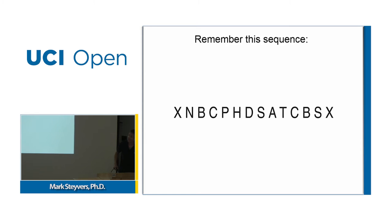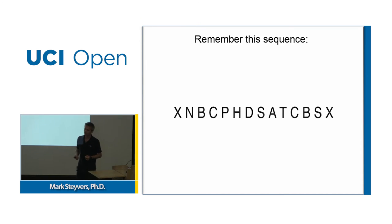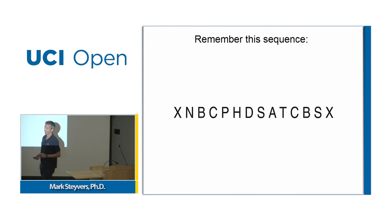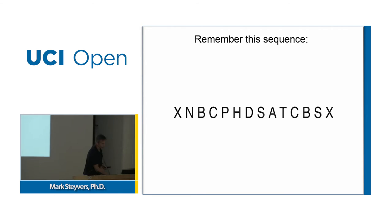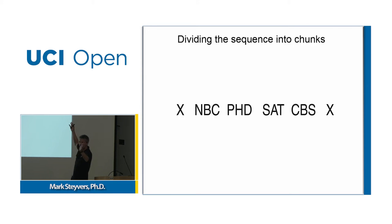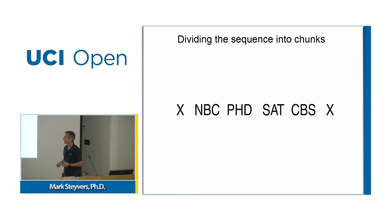Someone recalled: S, MBC, PhD, SAT, CBS, X. The strategy was chunking the letters into meaningful groups — MBC and CBS are television networks, PhD is a degree, SAT is a test — and separating out the X. That is exactly the way to circumvent the limitations of short-term memory: group information very quickly into meaningful units.